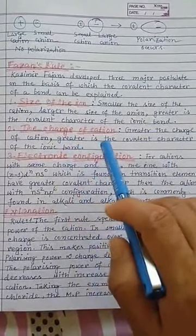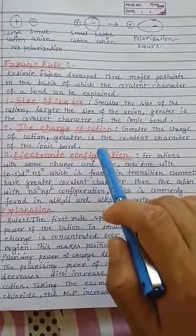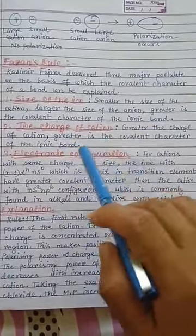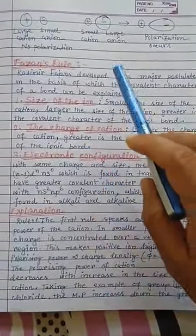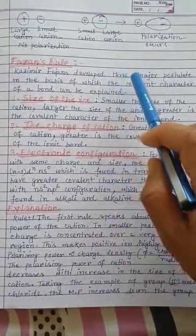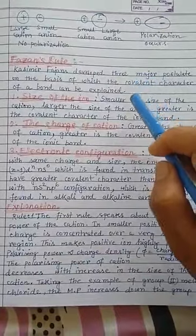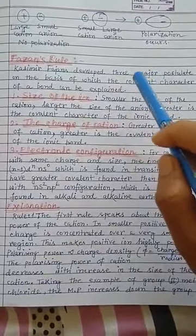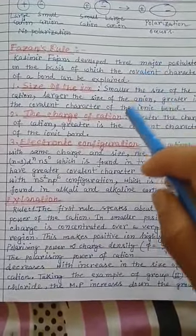The second postulate concerns the charge of the cation: the greater the charge of the cation, the greater the covalent character of the ionic bond. This is because polarizing power depends on the charge of the cation divided by its volume, so increasing charge increases polarizing power.